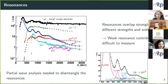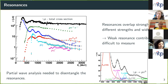Some resonance states are quite dominant, for example the D13 or the delta resonance at lower masses. However, some resonance states only weakly contribute, such as this P11, which is very small. Also notable is that these different resonance states are quite wide — they are broad and overlapping — and you need a partial wave analysis to disentangle them and identify the weak resonance contributions.